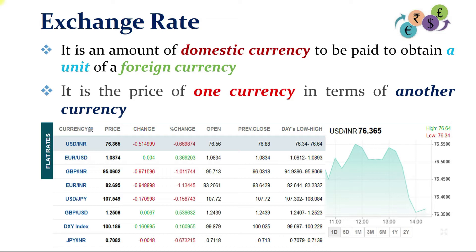First, look at the US dollar and INR — it is showing rupees 76.365, which means that to get one US dollar we have to pay rupees 76.365. In the same way, to get one Great Britain pound we have to pay rupees 95.0602. Likewise, to get one Japanese yen we have to pay rupees 0.7082.